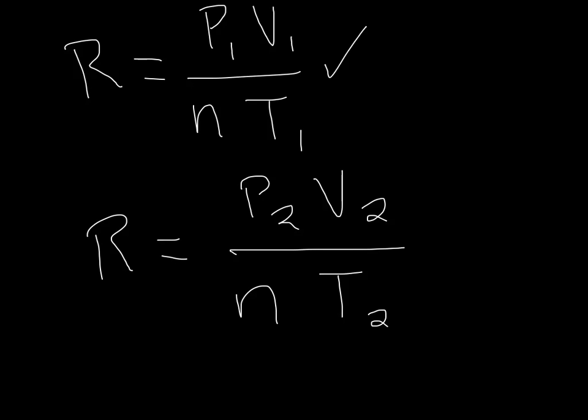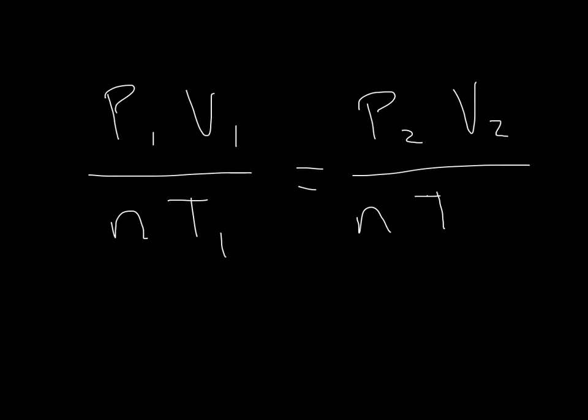Well, if the first equation is equal to R, and the second equation is equal to R, then obviously they both have to be equal to R. So what's the consequence of that? The consequence is that P1 times V1 over N times T1 is equal to P2 times V2 over N times T2. So if N is the same for both, and it is, we can cross it out, and we get an equation that says P1 V1 over T1 is equal to P2 V2 over T2.